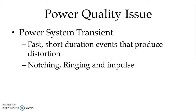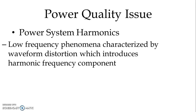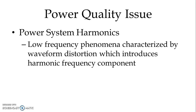Transient energy transferred to other electrical circuits is eventually dissipated — this differs from the factors that affect power frequency disturbances. Power system harmonics is a low frequency phenomenon characterized by waveform distortion, which introduces harmonic frequency components.